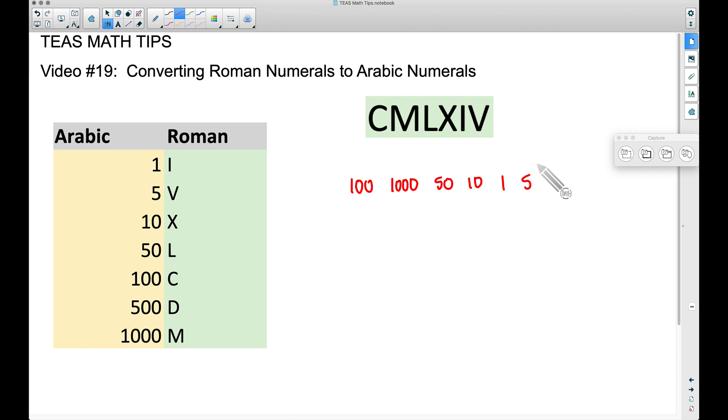Now here's what we're going to do: whenever you have a smaller number in front of a bigger number, you want to subtract them. For example, right here we have a smaller number in front of a bigger number, so let's subtract them. Let's take a thousand minus a hundred, we get 900. Now let's look anywhere else where we have a smaller in front of a bigger, and we have that right here - we have a one in front of a five. Let's subtract those, we get four.